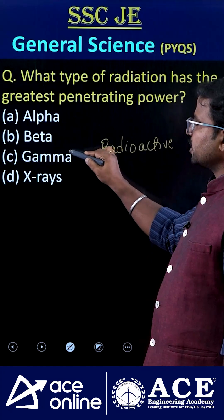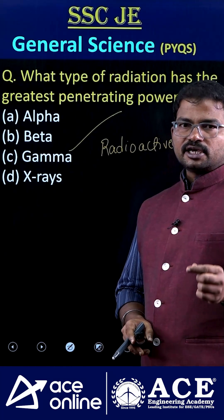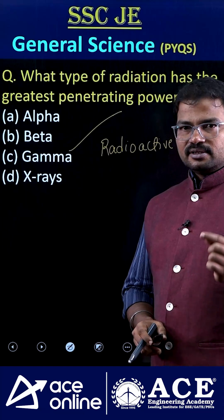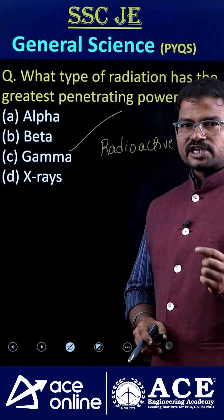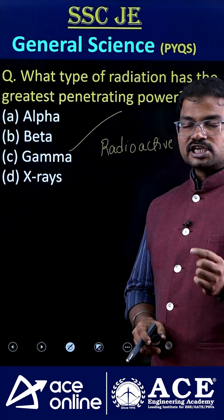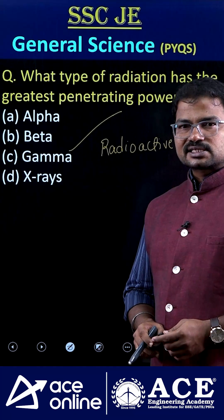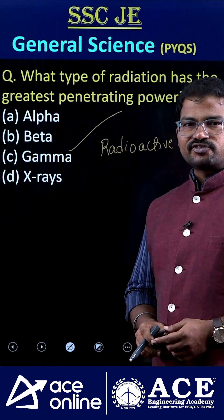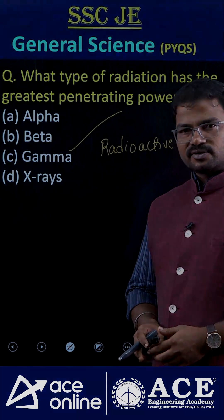So the correct answer is option C. Now I have a question for you: to produce gamma rays in chemotherapy, which element is mostly used — cobalt-60 or cobalt-59? If you know the answer, please comment. Thank you.